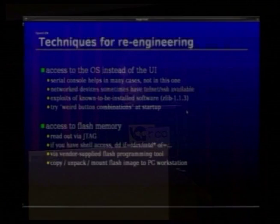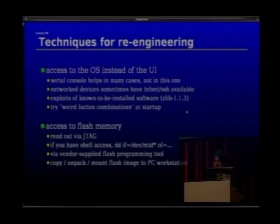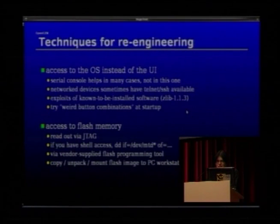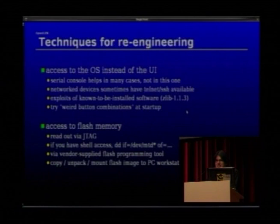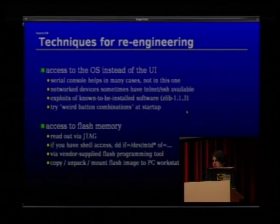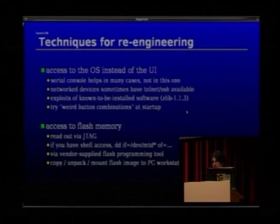What we actually want is access to the OS. It's a Linux phone, but you don't really have access to Linux. A serial console obviously helps — not in this case. Network devices sometimes have Telnet or SSH available. Also, sometimes installed software is known to be exploitable: this phone ships with libpng 1.1.3, which has at least two documented exploitable vulnerabilities. It's feasible to write a libpng-compressed PNG image containing shellcode, exploiting the library via the Opera web browser on the phone, which links against libpng. I didn't try it, but it should be possible.